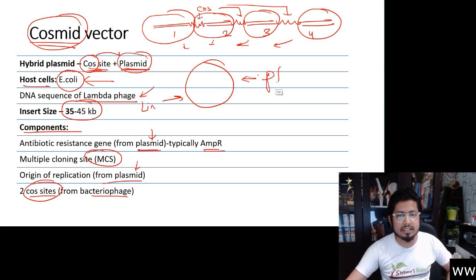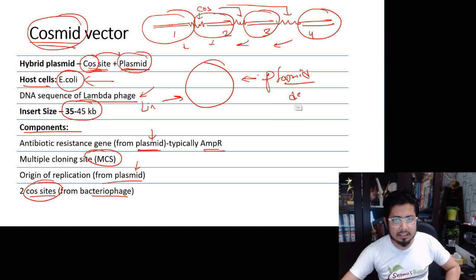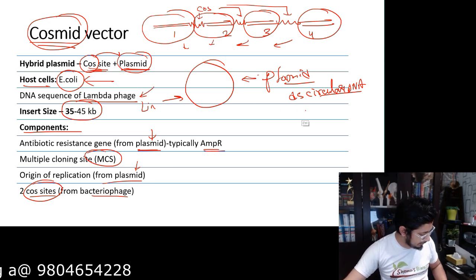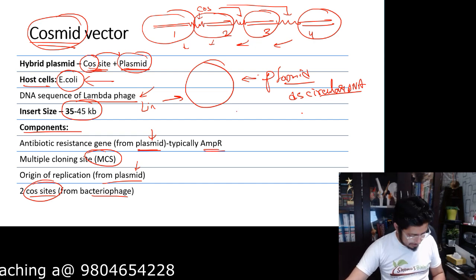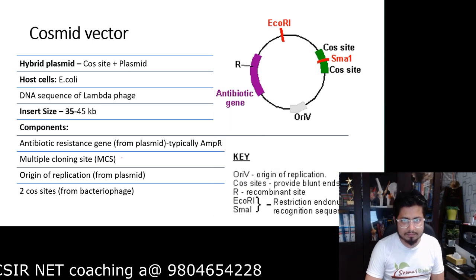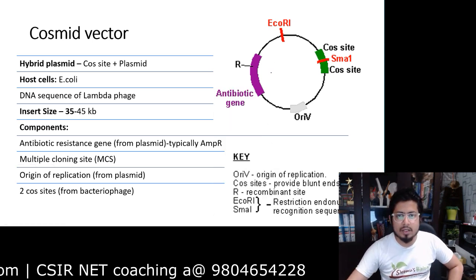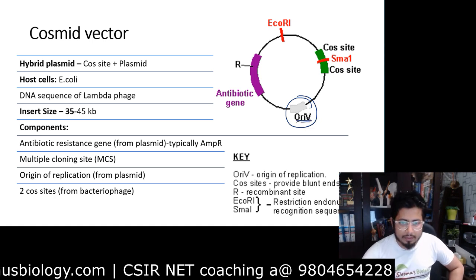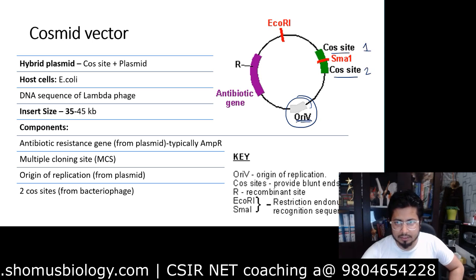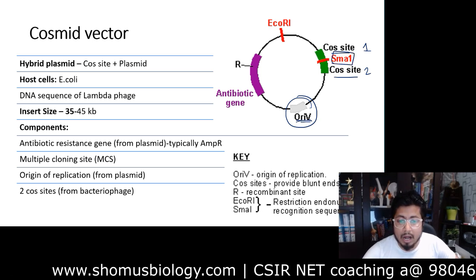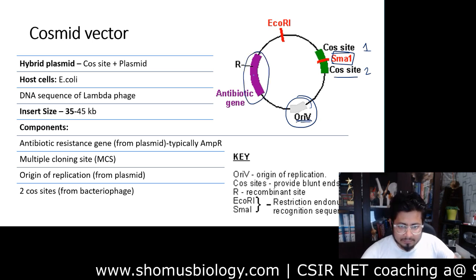The resulting structure looks very similar to a plasmid — a double-stranded circular, self-replicating DNA. In the diagram, you can see the Cosmid has an origin of replication, and two cos sites: cos site 1 and cos site 2. They are joined together, and at their joining site there is a restriction endonuclease site — the MaI cleavage site. There is also an antibiotic resistance gene placed there.